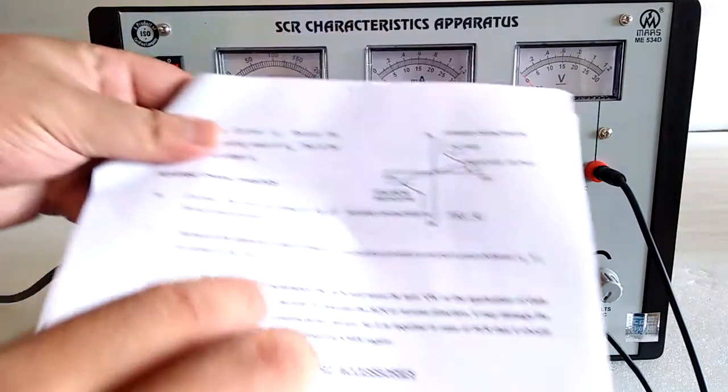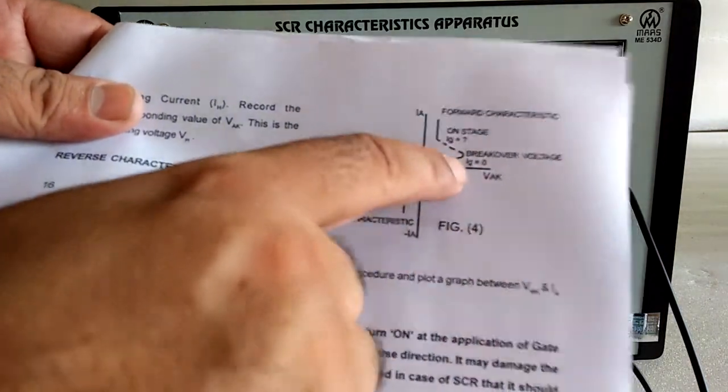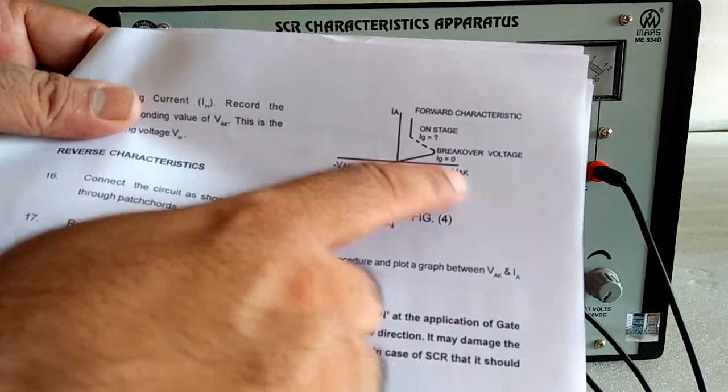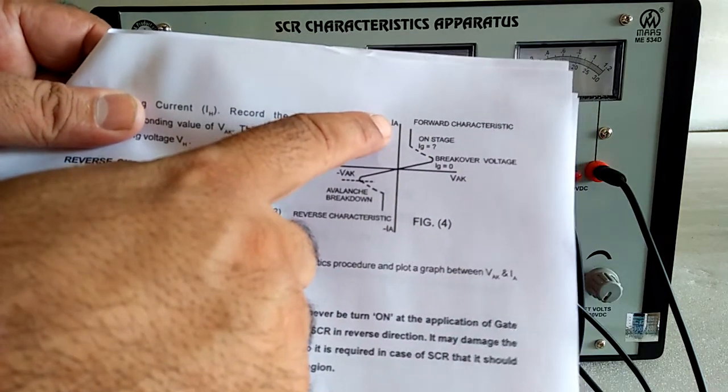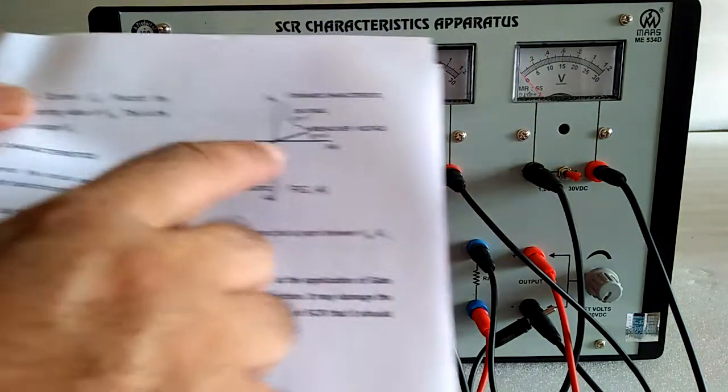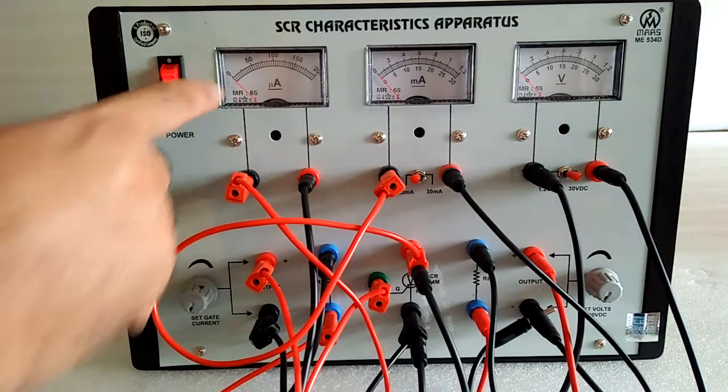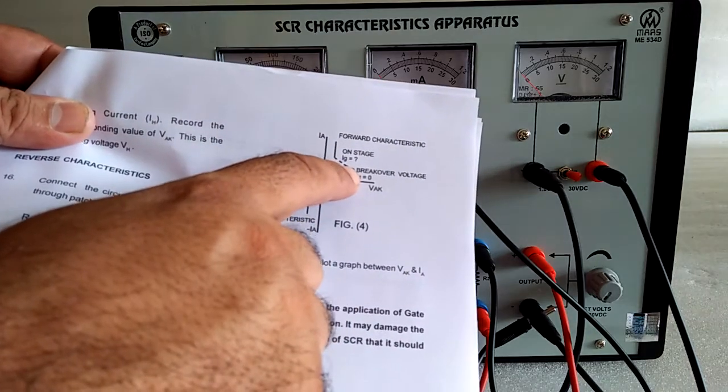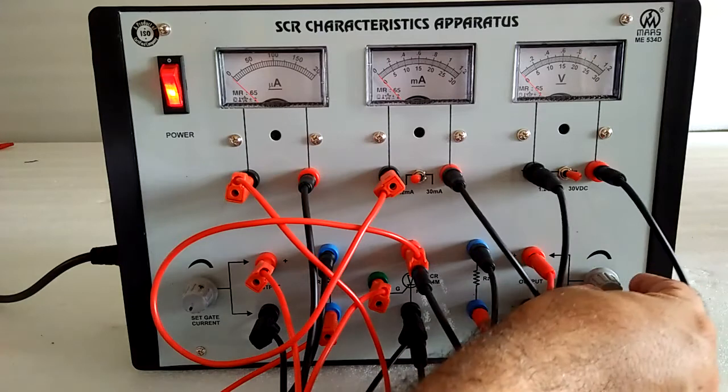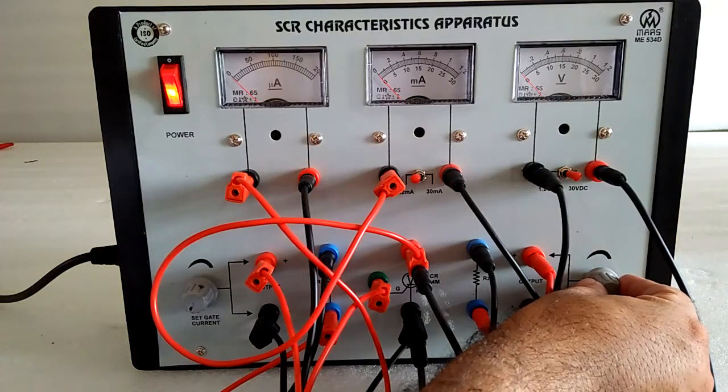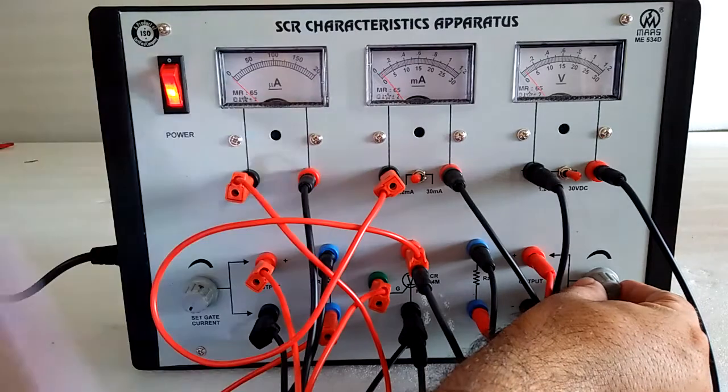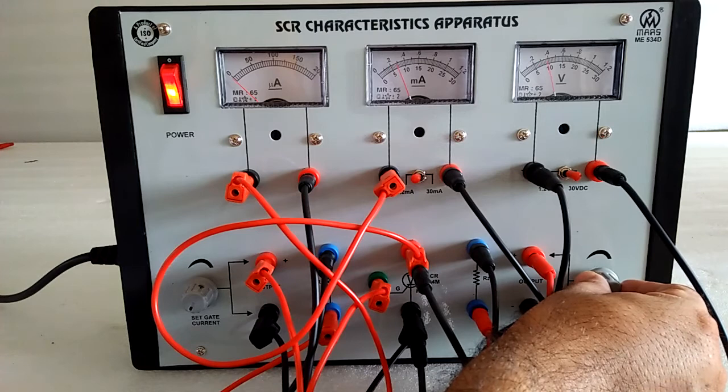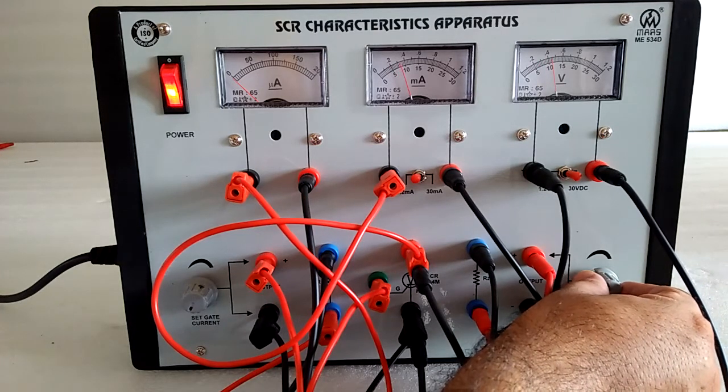And we have the graph over here. We make the readings voltage across anode cathode and same time current from here. Then Ig is 0. After making these readings for the graph, we increase and at the same time note the current and voltage readings.